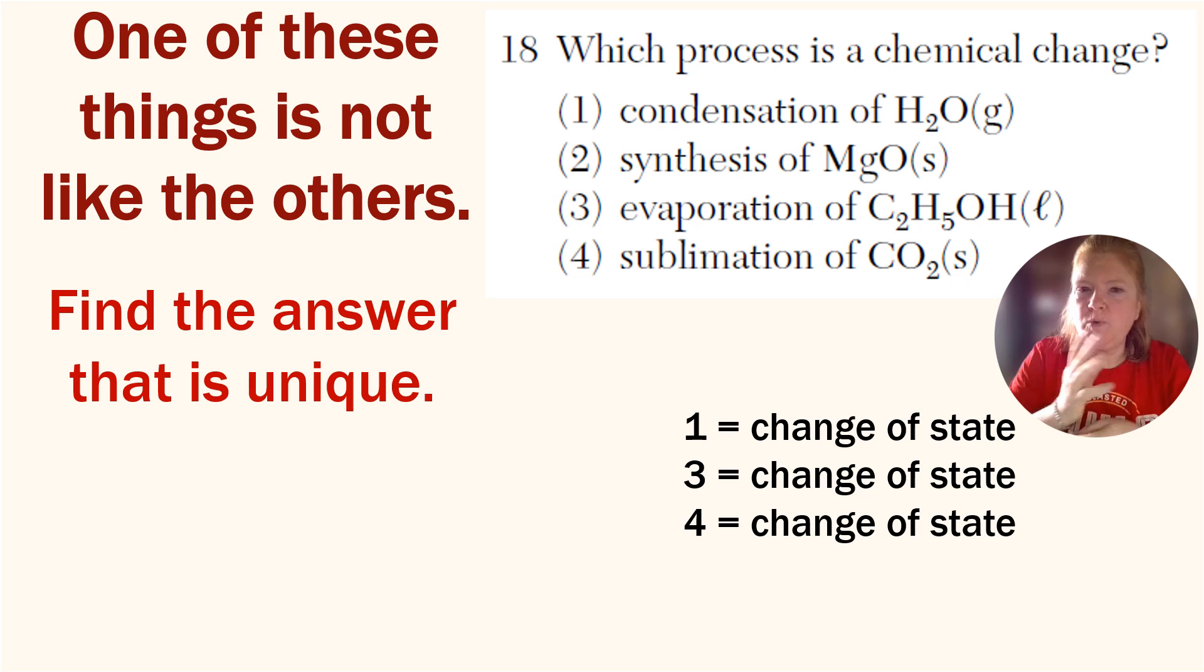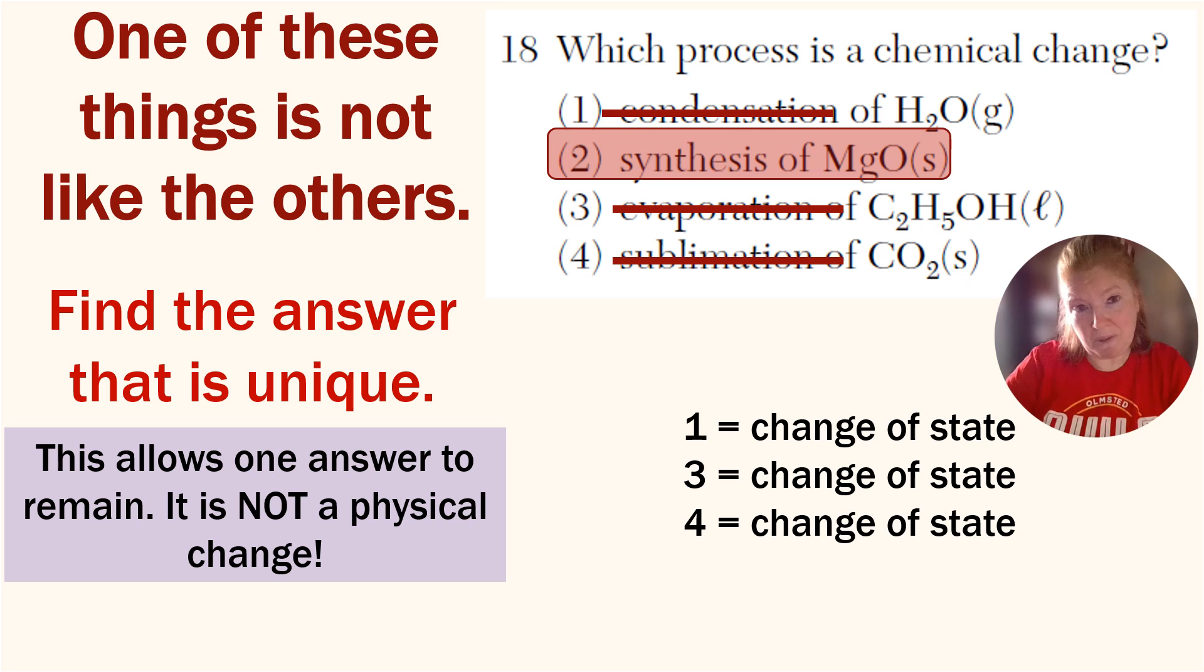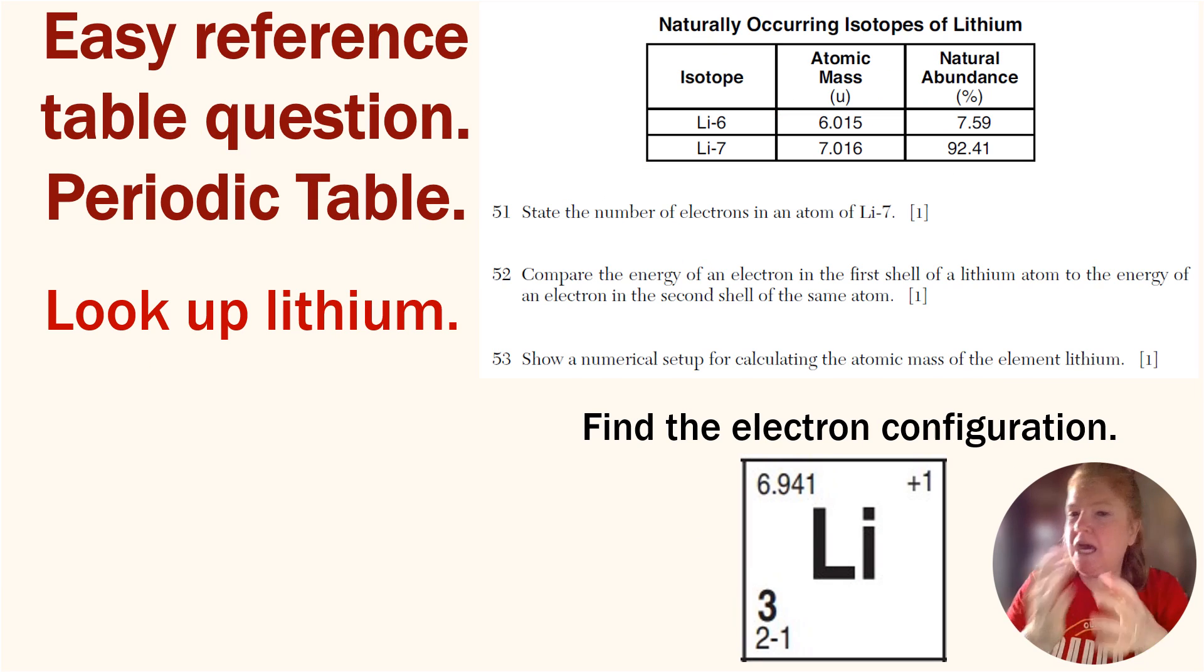This is a good 'one of these things is not like the others' option where it says 'which process is a chemical change?' That means all the rest are physical. So if you find the physical, what's left is the chemical change. Another easy reference table question - it doesn't have to be a hard reference table question for Part B2. To state the number of electrons in an atom of Li-7, literally three. You just look right here at the atomic number, because it says atom, and when it's an atom the number of protons equals the number of electrons. Also you could add up the numbers in the electron configuration, but it's literally this number.